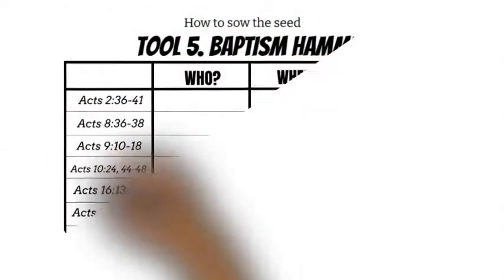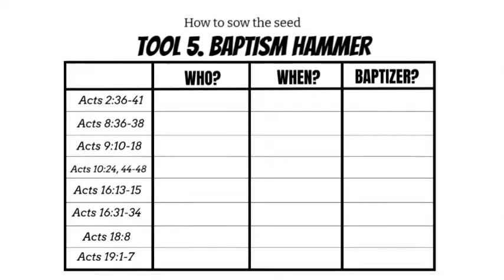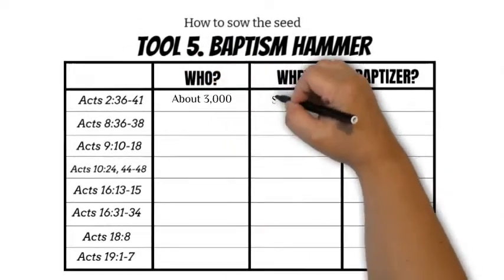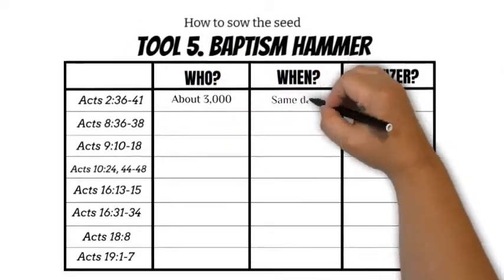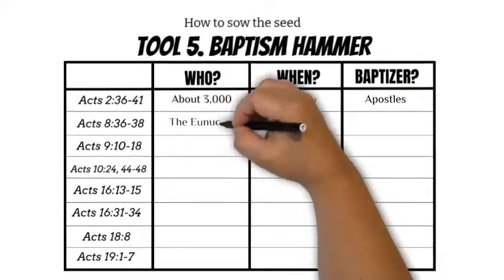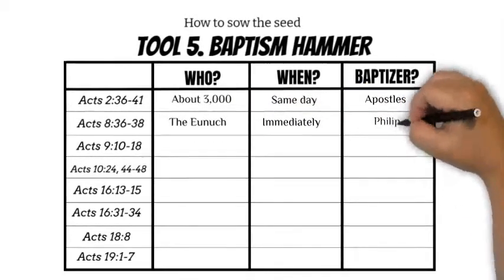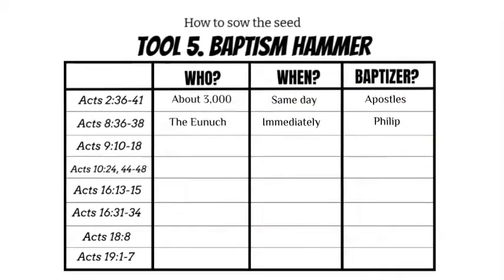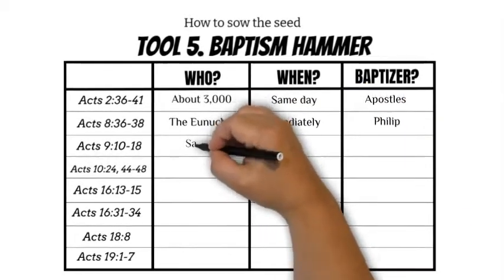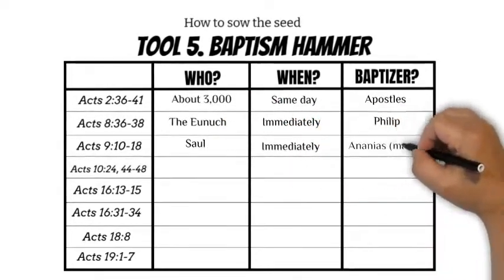I will do it here with you. Acts 2:36–41: who was baptized — almost 3,000; when — that same day; who baptized — the apostles. Acts 8:36–38: who was baptized — the eunuch; when — immediately; who baptized — Philip. Acts 9:10–18: who was baptized — Saul; when — immediately; who baptized — probably Ananias.